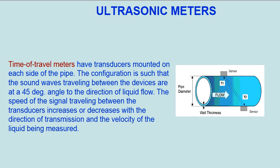Time of travel meters have transducers mounted on each side of the pipe. The configuration is such that the sound waves traveling between the devices are at a 45 degree angle to the direction of liquid flow. The speed of the signal traveling between the transducers increases or decreases with the direction of transmission and the velocity of the liquid being measured.